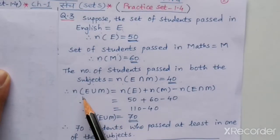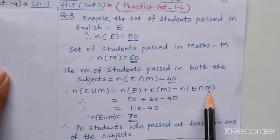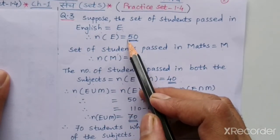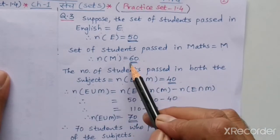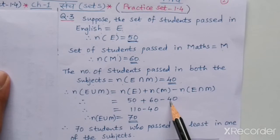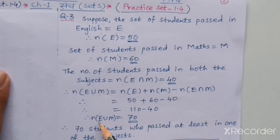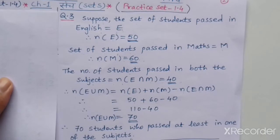Using the formula n(E∪M) = n(E) + n(M) − n(E∩M), putting the values: 50 + 60 − 40 = 70. So n(E∪M) = 70. There are 70 students who passed in at least one of the subjects. This is the number of students who appeared for this competitive exam.